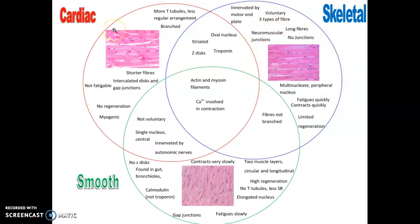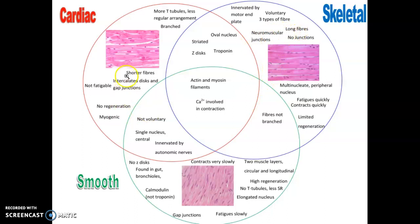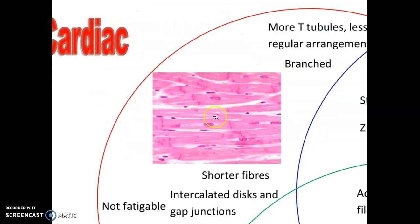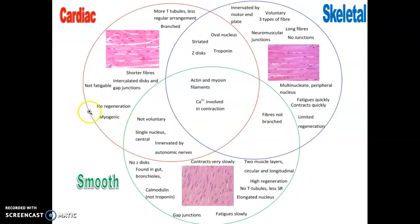Cardiac muscle has striations as well — both cardiac and skeletal muscle have banding patterns and sarcomeres. Cardiac has short branched fibers and intercalated discs. It does not fatigue and has a good supply of mitochondria.